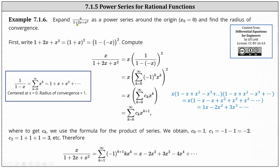To begin, we'll factor the denominator of 1 plus 2x plus x squared, which is equal to the square of 1 plus x. Comparing 1 plus x to 1 divided by the quantity 1 minus x, let's write 1 plus x as 1 minus negative x. Going back to x divided by the quantity 1 plus 2x plus x squared, we can write this as x times the square of 1 divided by the quantity 1 minus negative x. We can use a geometric power series to write a power series for 1 divided by the quantity 1 minus negative x by replacing x with negative x, giving us the sum from k equals 0 to infinity of negative 1 to the power of k times x to the power of k.